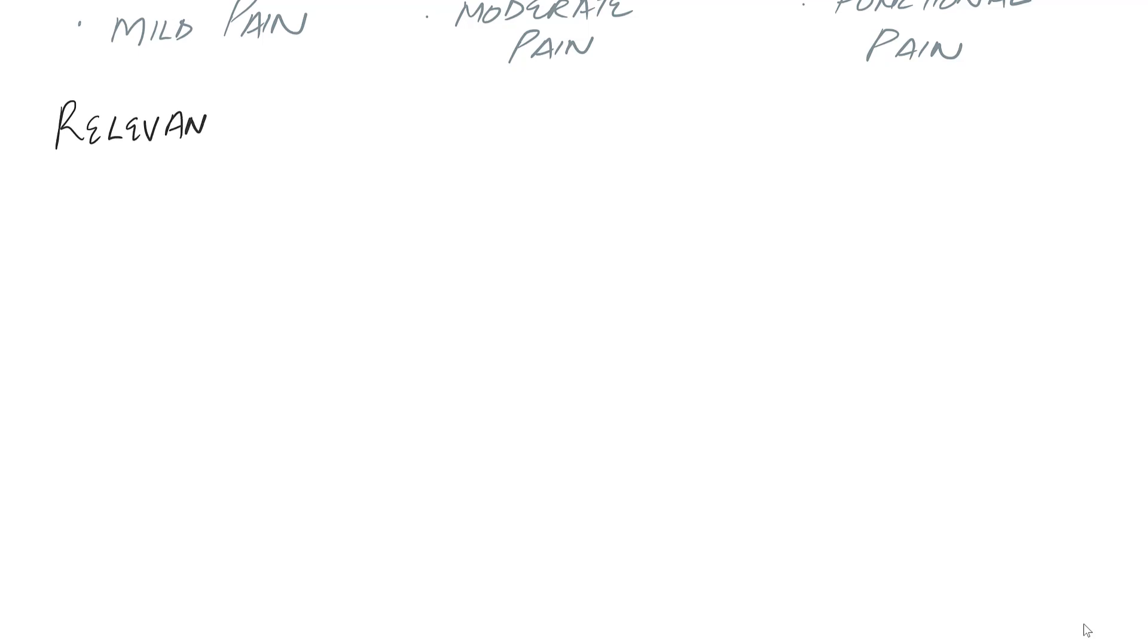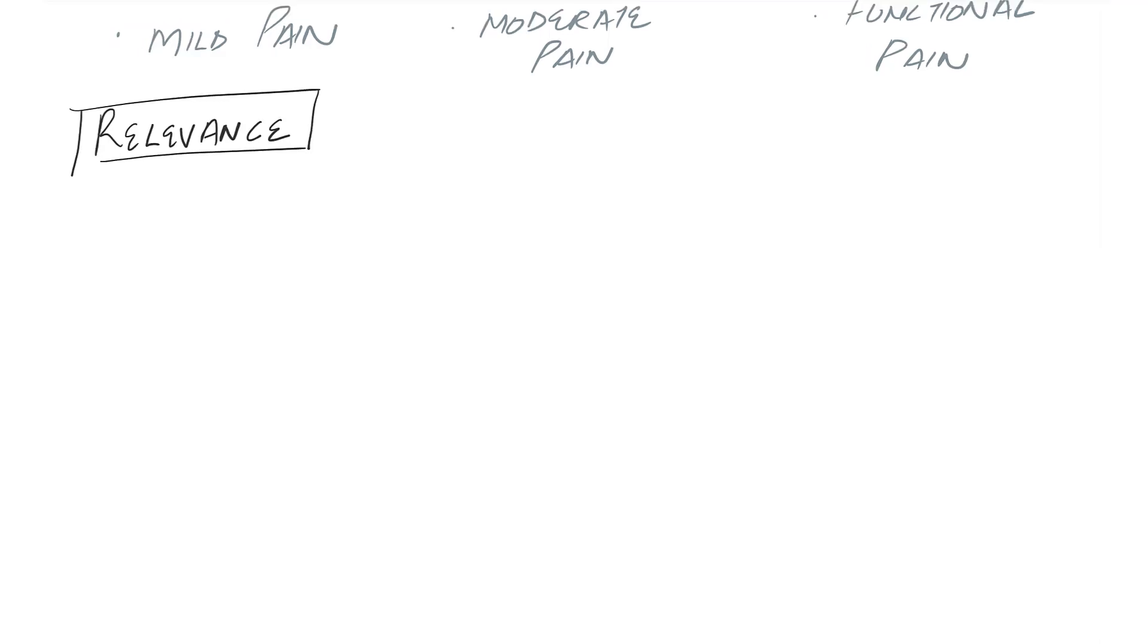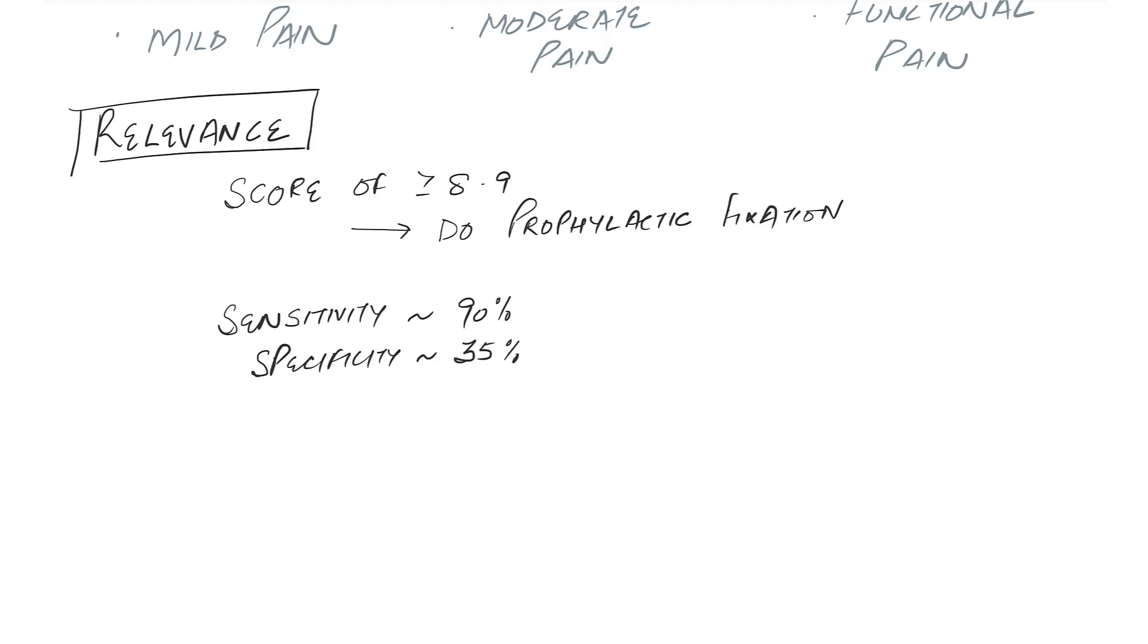That total score judges the relevance of MIREL scoring system. The total score determines whether you need a prophylactic fixation or not. A score of eight or more than nine, you usually say anything above nine is indicative of prophylactic fixation.